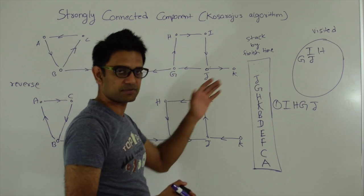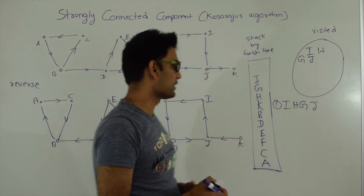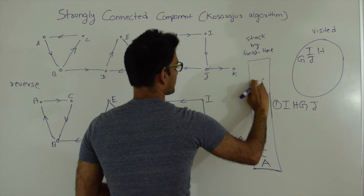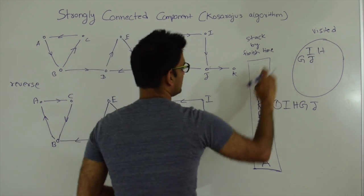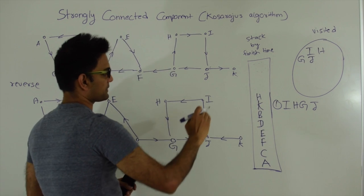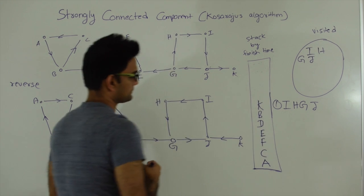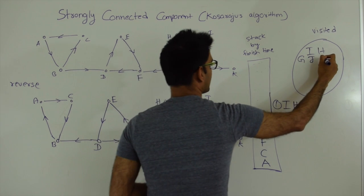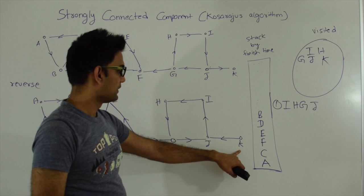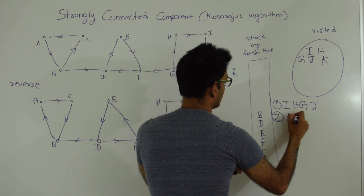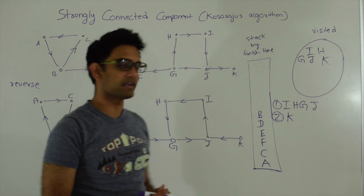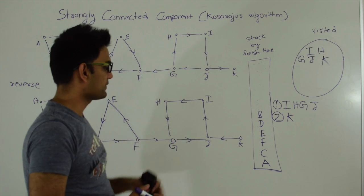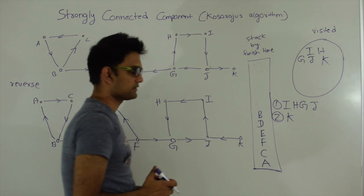We go back to the stack and pop out the next elements. J is already visited, G is already visited, H is already visited. Then we pop out K — K is not visited so we add K and start a new DFS. This is the start of our second strongly connected component. From K we can go to J but J is already visited, and K has no other children in this graph. So the second strongly connected component is just one vertex: K.